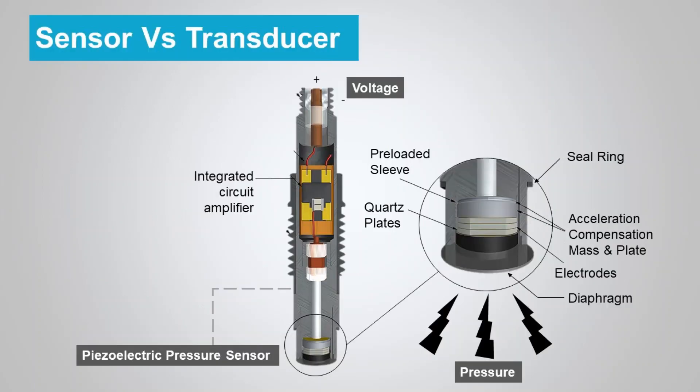In a measurement system, a sensor is defined as a device that converts the physical quantity — usually a non-electrical input — directly into an electrical output. For example, a piezoelectric pressure sensor will sense the pressure (physical quantity) and convert it into voltage (electrical output) through the transduction process. No conversion of the output of the transduction process is required in this case.